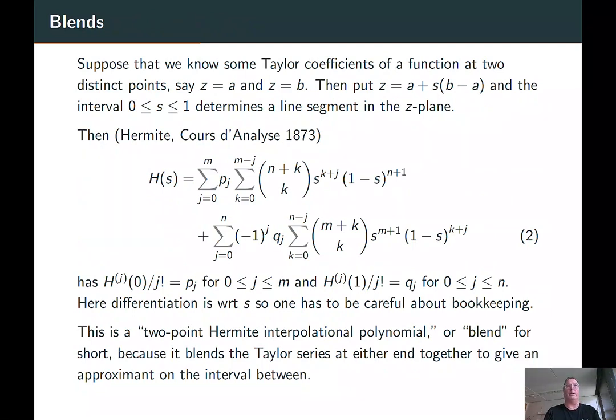What is a blend really? Suppose we know some Taylor coefficients of a function at two distinct points, say at z equals a and at z equals b. Then put z equals a plus s times (b minus a), and now we have a unit variable s going from 0 to 1 that determines the line segment in the plane. Hermite, 150 years ago, wrote down this lovely formula which says that H(s), the following polynomial, is the sum from j equals 0 to M of p_j times a basis function, the jth basis function there, plus the sum from j equals 0 to n of q_j times another basis function, which is the same as the first one except it's got alternating signs in it. Then the jth Taylor coefficient at the left end is the p_j, and the jth Taylor coefficient at the right end is the q_j.